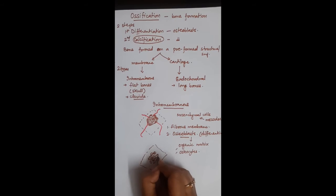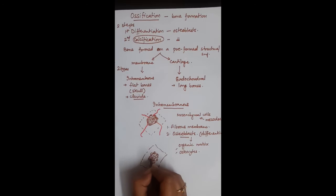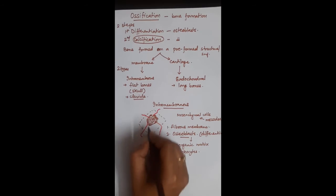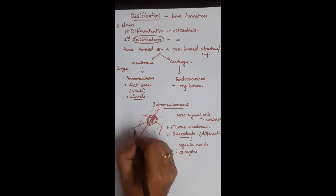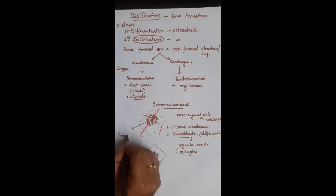So this is how bone formation is started from the center, and this point where the ossification has started is called primary center of ossification, which appears before birth.